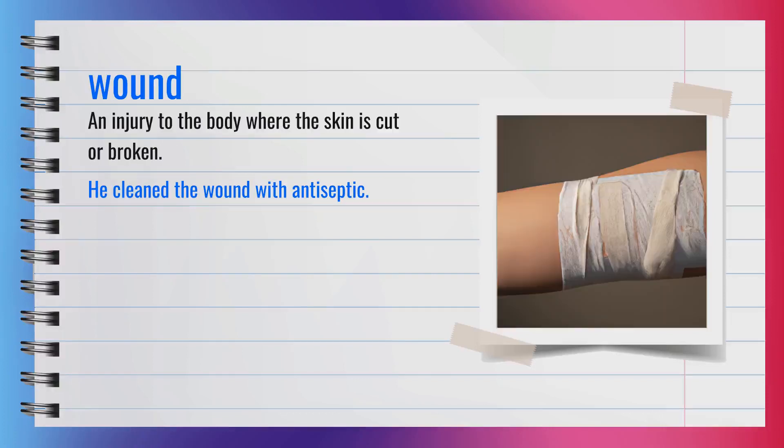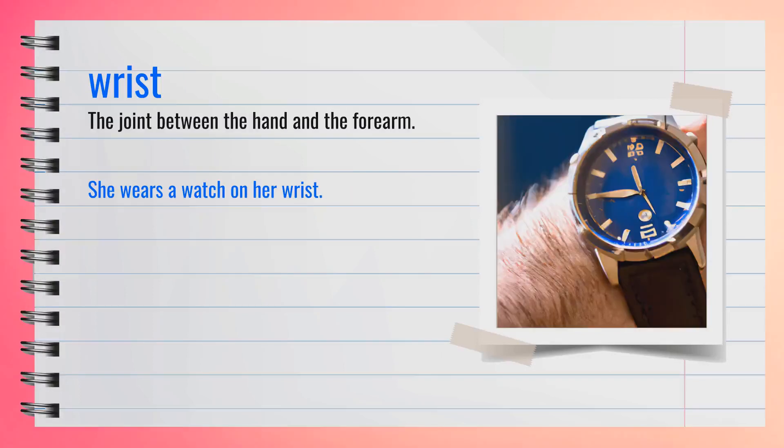The word wound, spelled W-O-U-N-D, is an injury to the body where the skin is cut or broken. Synonyms include injury and cut. For example, he cleaned the wound with antiseptic. In summary, a wound is an injury where the skin is broken.